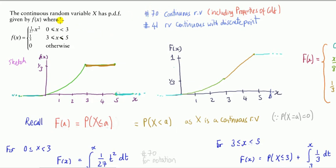In this case we have a continuous random variable, but it's what we call piecewise because it comes in pieces — you can see two pieces. I'm going to sketch it: between zero to three it looks like a curve, three to five it's a horizontal line at one-third, and zero otherwise, meaning outside zero to five it takes the value zero.